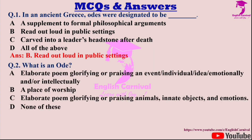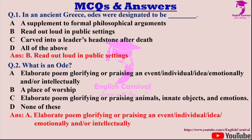Question two: What is an ode? Options are A: An elaborate poem glorifying or praising an event, individual, or idea emotionally and/or intellectually; B: A place of worship; C: An elaborate poem glorifying or praising animals, inanimate objects, and emotions; and D: None of these. Correct answer is A — an elaborate poem glorifying or praising an event, individual, or idea emotionally and/or intellectually.